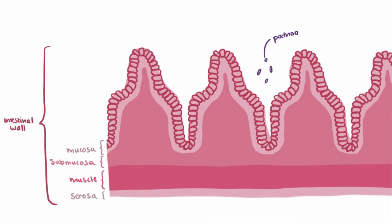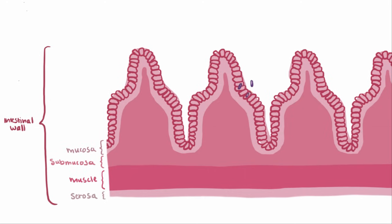Typically pathogens aren't supposed to just be able to pop right through the wall, but it's thought that perhaps some defect in the epithelial barrier in Crohn disease more easily lets these pathogens through. Whatever the case, once they're through, the immune system is activated through antigen presentation, which ultimately leads to the apparent unregulated inflammation we just described.